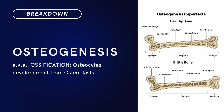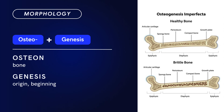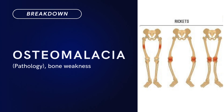Compound Term: Osteogenesis. Brief Definition: also known as ossification — the development of osteocytes from osteoblasts. Term Morphology — osteo plus genesis. Osteo is derived from osteon, meaning bone, and genesis means origin or beginning. There you have it: osteogenesis.